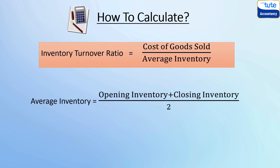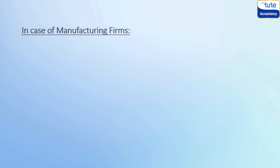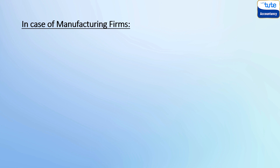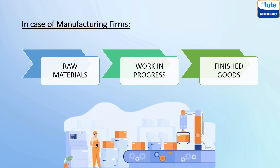Average inventory is the average of opening and closing inventory. So this ratio establishes a relationship between cost of goods sold during the year and average inventory held during the year. It measures the efficiency with which the firm utilizes or manages its inventory, and basically it indicates how fast the inventory is sold or used. In case of manufacturing firms, there are three types of inventories: raw materials, work in progress and finished goods. So this ratio helps us to study the movement of inventory through the production cycle.